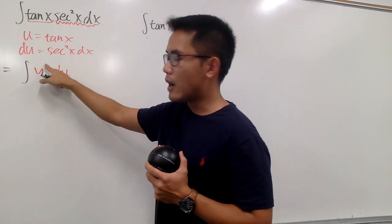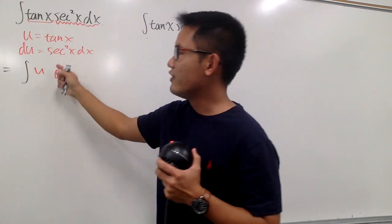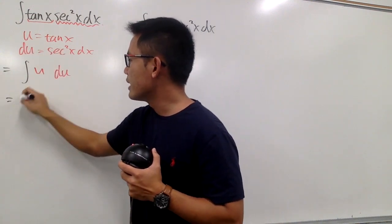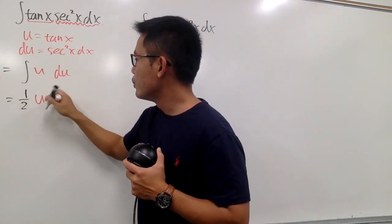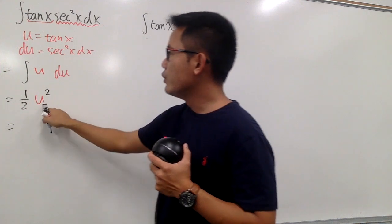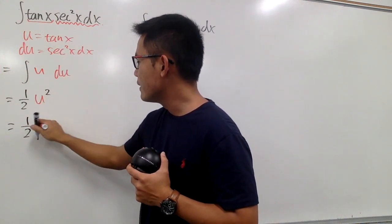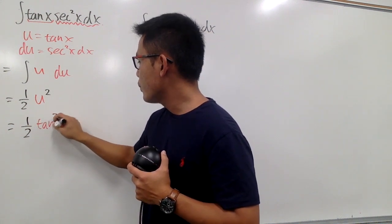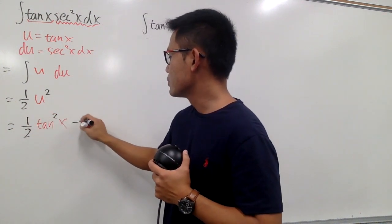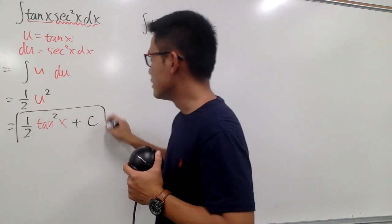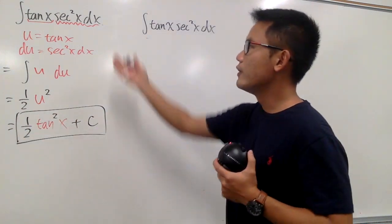Of course, this is u to the first power. You add one to the power and divide it by the new power, so we get 1 half u squared. u is tangent x, so just put that down right here. So finally, we have 1 half tangent squared x, and we are done. So put down plus c like this. This is the first result that we can have for that integral.